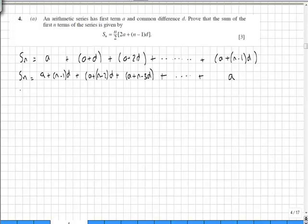Now what we're going to do is add these two rows together to effectively get twice the sum of the number of terms in an arithmetic series. So here we're going to have 2S_n.